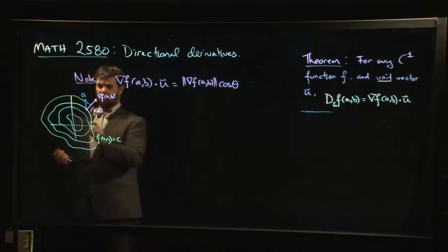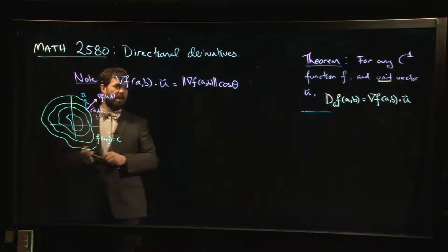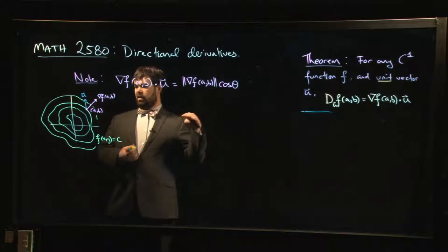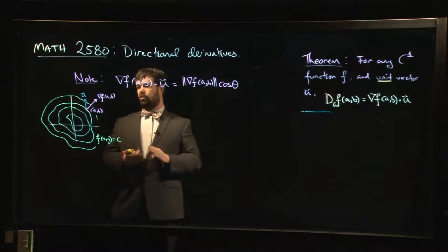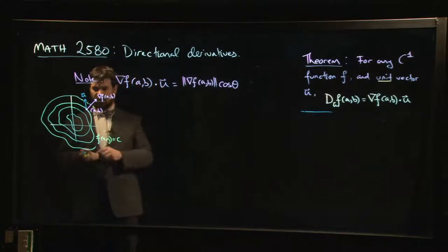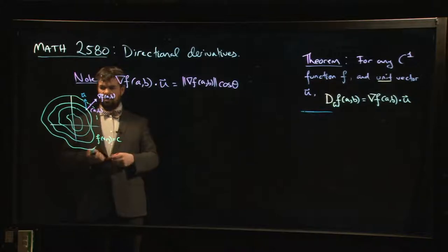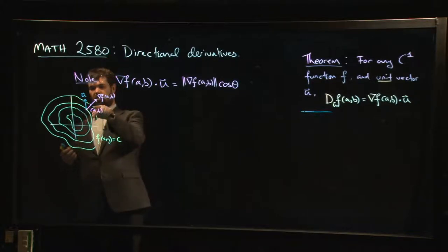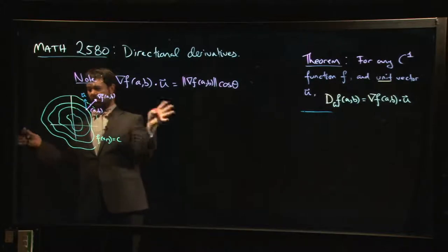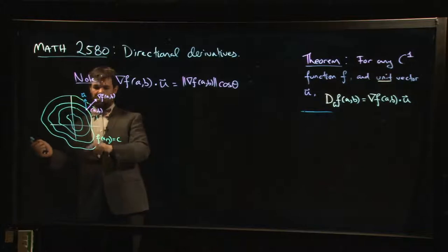Think of the directional derivative as giving you this rate of change. Think of this as an elevation map, where the spacing between each curve represents an elevation gain of, let's say, 10 meters or something like that. So the spacing, the distance between level curves gives you some idea of the steepness.